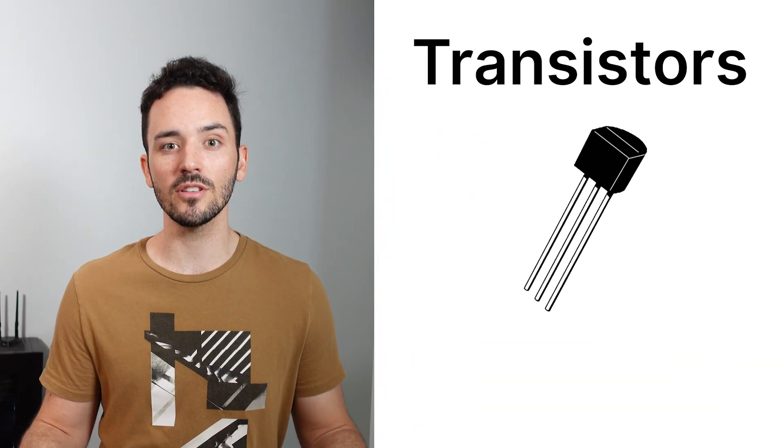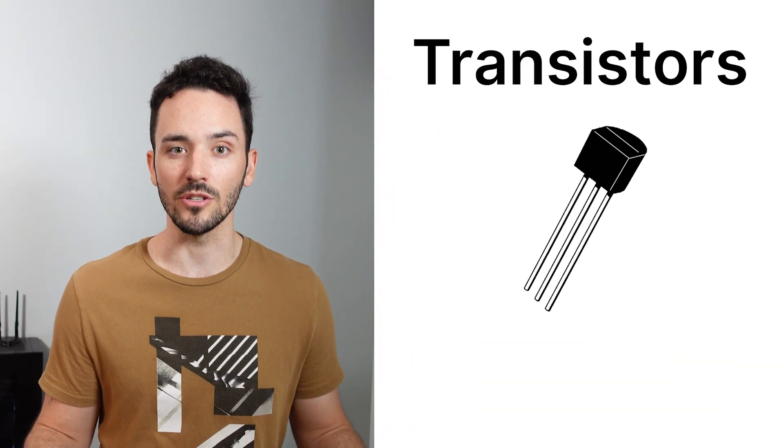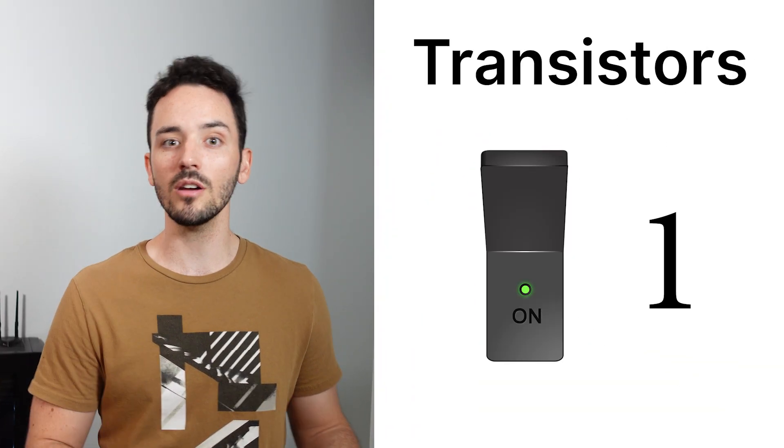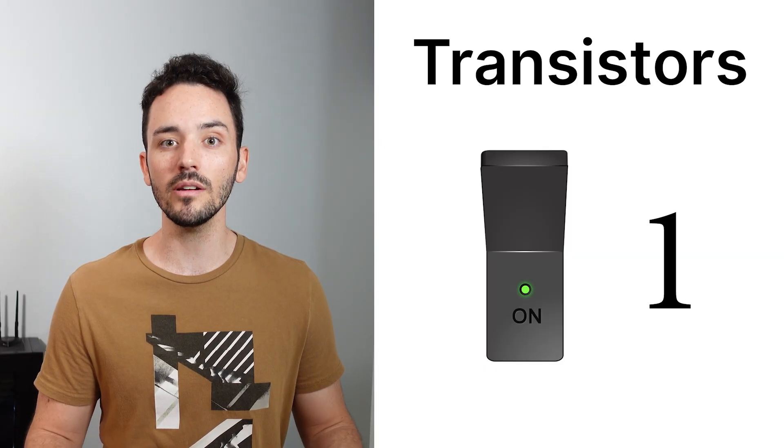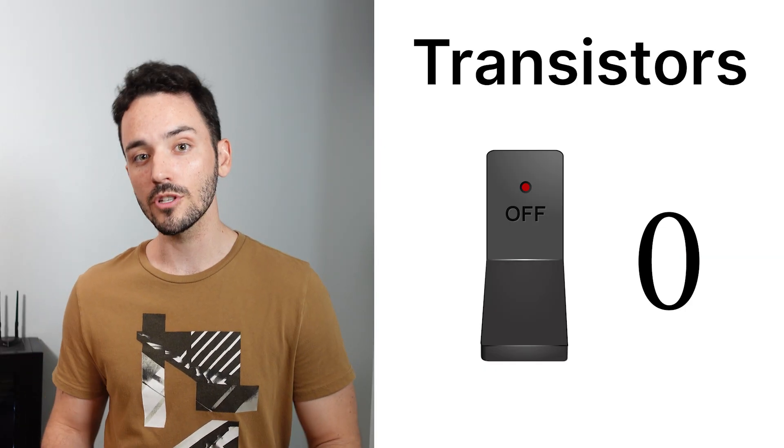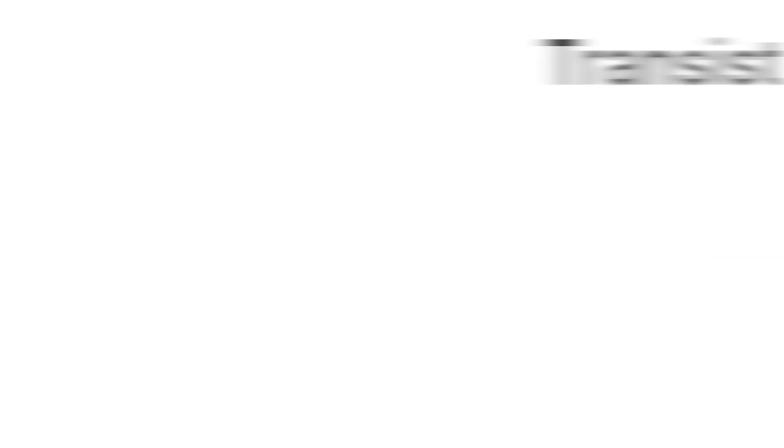Machine language is comprised of zeros and ones and cannot be directly read by humans. These numbers tell the computer what to do through transistors. Transistors are just switches — they can either be on, which designates a one, or off, which is a zero.